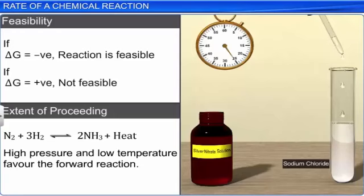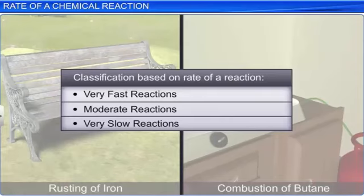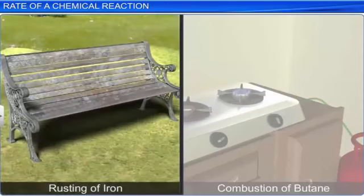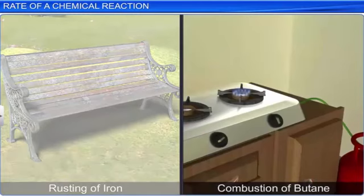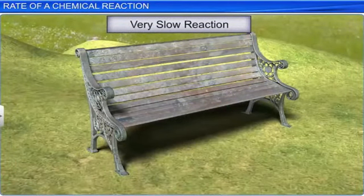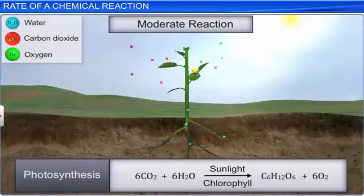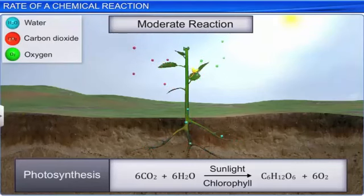Let us understand this in detail. In our daily lives, we see various chemical reactions taking place. For example, the rusting of iron in the presence of humid air and the combustion of butane, the main component of LPG. While the rusting of iron is a very slow process and may take years, the burning of butane is instantaneous.